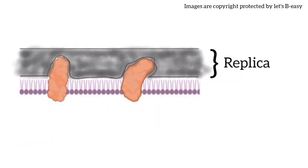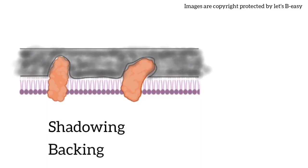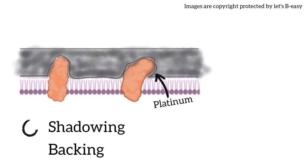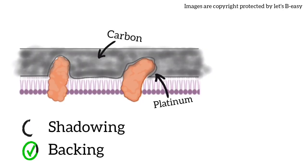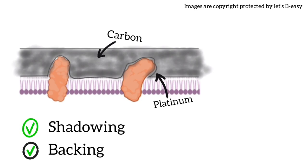Then a replica is made of the fractured surface, involving two steps: shadowing and backing. An oblique unidirectional shadowing is carried out by evaporating a fine layer of heavy metal, such as platinum, onto the specimen. Then a carbon layer is deposited on top of the metal layer to impart sufficient strength to the replica — this process is known as backing.